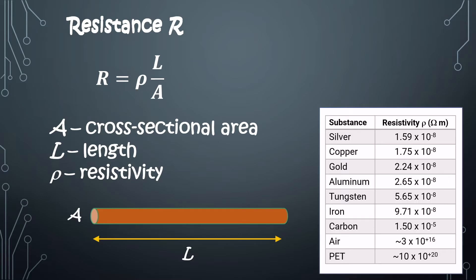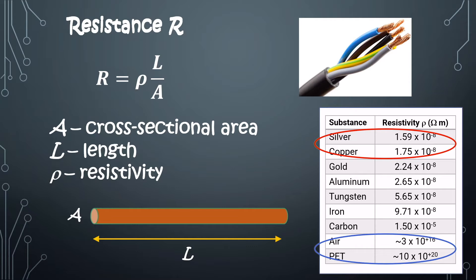We can see that conductors such as silver and copper have low resistivity, whereas insulators such as plastic and air have high resistivity. That is why electric cables are typically made with copper wires, so that resistance and power loss can be reduced.